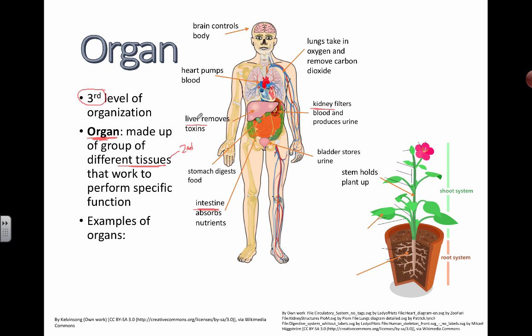A few more organs you may have heard less about: the liver is the biggest organ in your body — it removes toxins and poisonous substances to keep us healthy. The kidney filters the blood and produces urine, which travels down tubes into the bladder. The intestines are where food goes after the stomach — in fact, if you wanted to jump rope with an organ, you'd pull out your small intestines; they're pretty long.